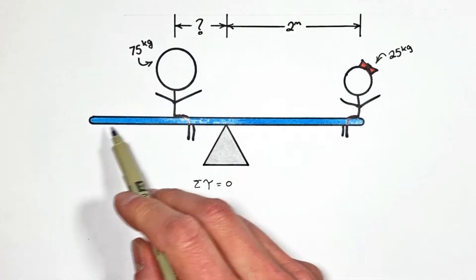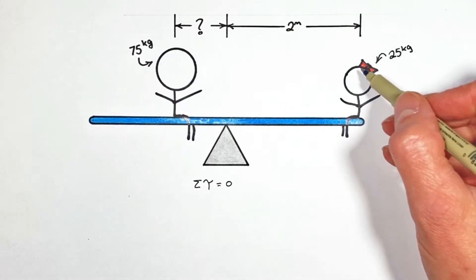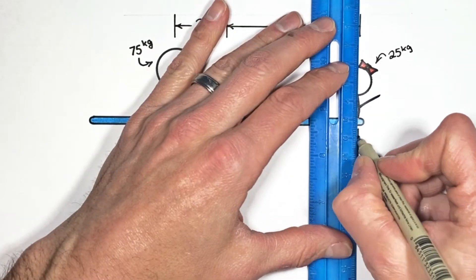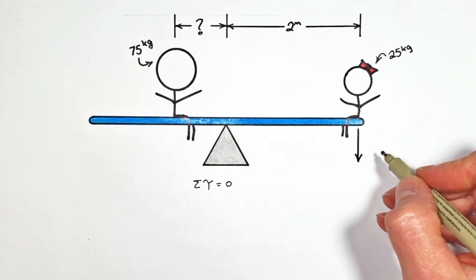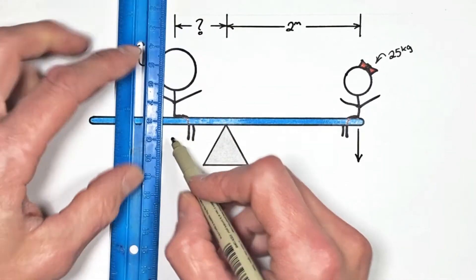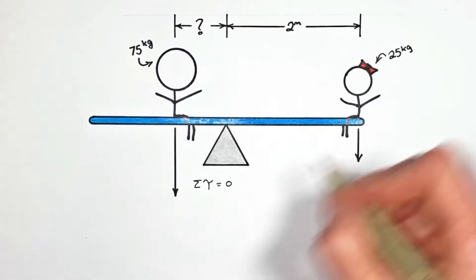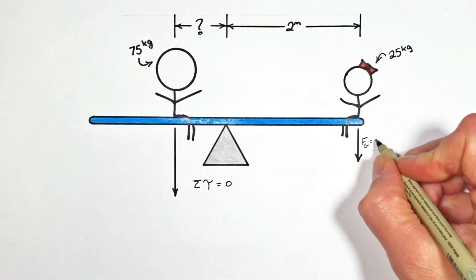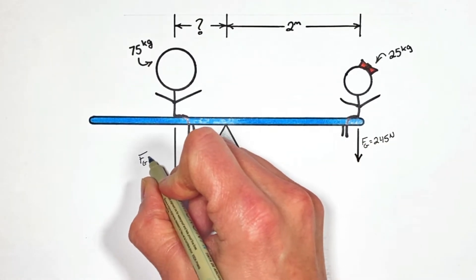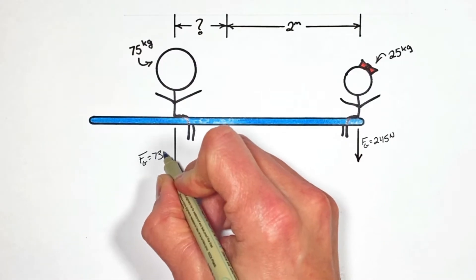Now there's two things which are producing torque on this beam. The first being the weight of this little person sitting over here on the right-hand side. The other force being the weight of this larger person sitting over here. And working out those values, we find the force by gravity from this smaller person is 245 newtons, and the force by gravity on the larger person is 735 newtons.